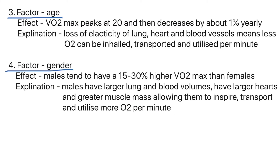The third factor is age. VO2 max peaks at 20 and then decreases by about 1% every year. It doesn't mean you can't have a higher VO2 max at 25 than at 20 — if you train aerobically at 25 but didn't train at 20, you'll have a larger VO2 max. It just means your potential for your greatest VO2 max was at age 20, decreasing 1% per year. The reason is you lose elasticity of lung, heart and blood vessel tissue, meaning you can inhale, transport and utilise less oxygen.